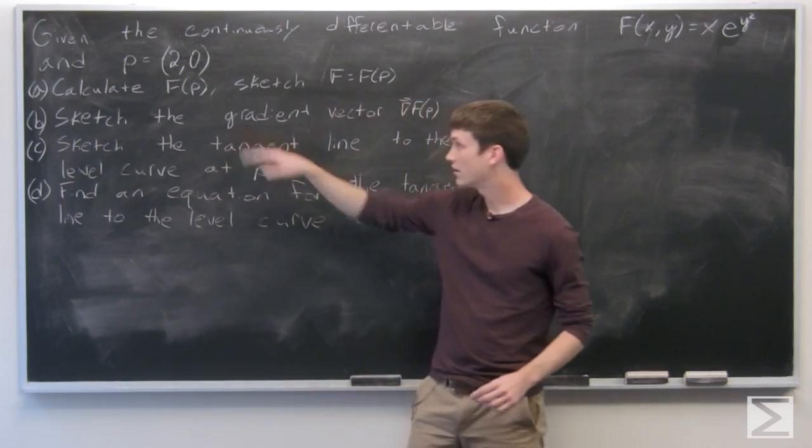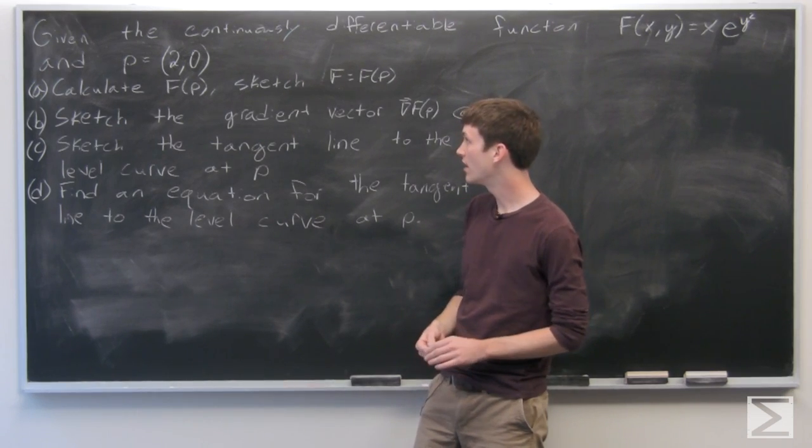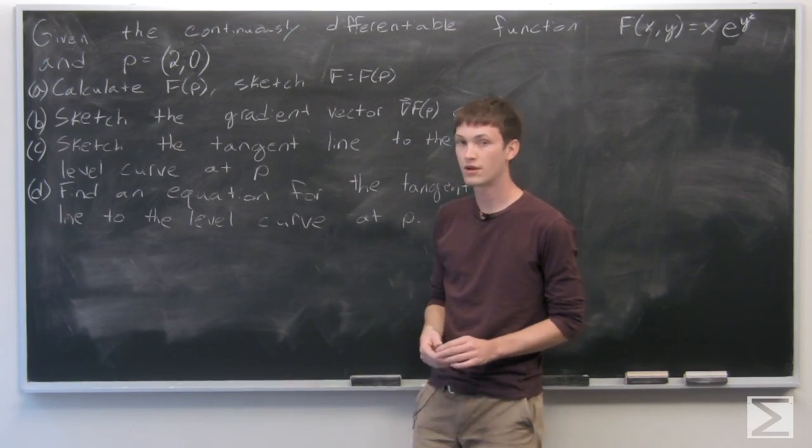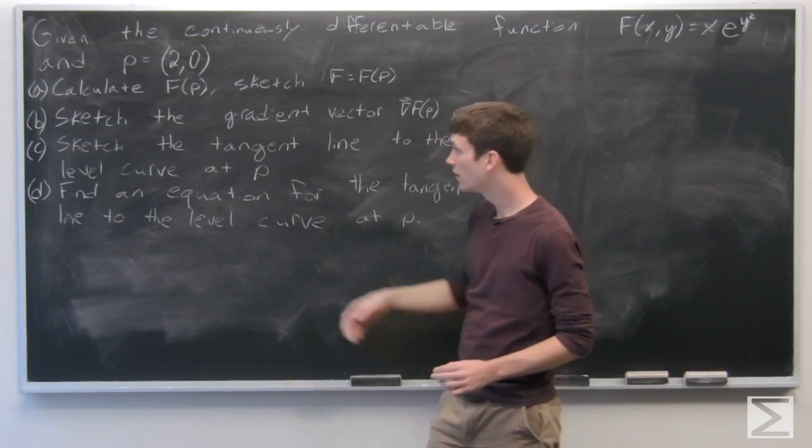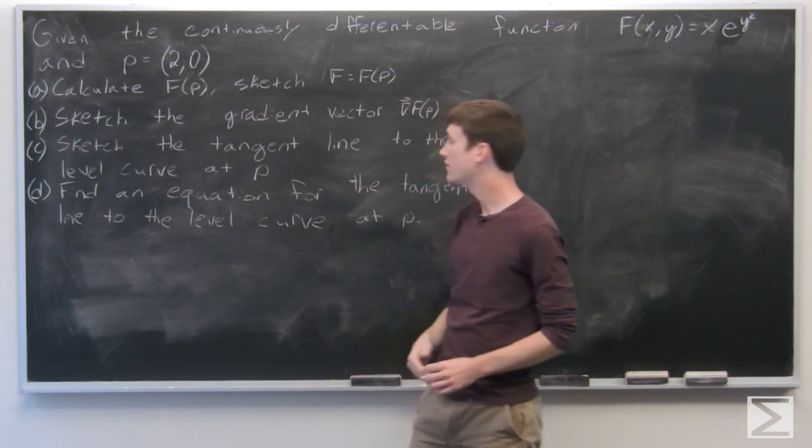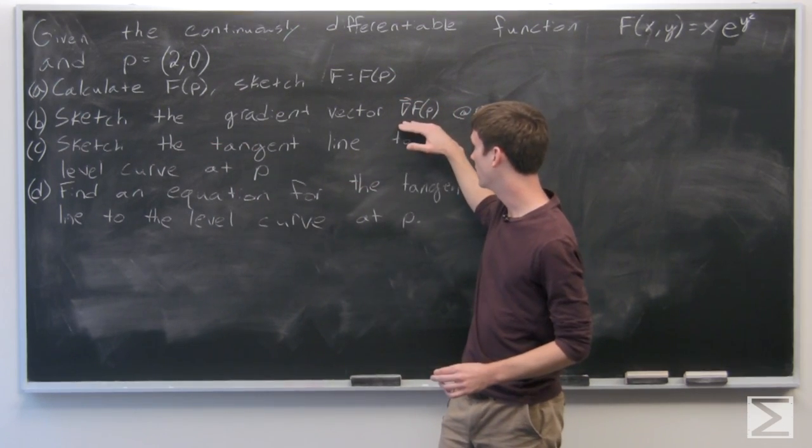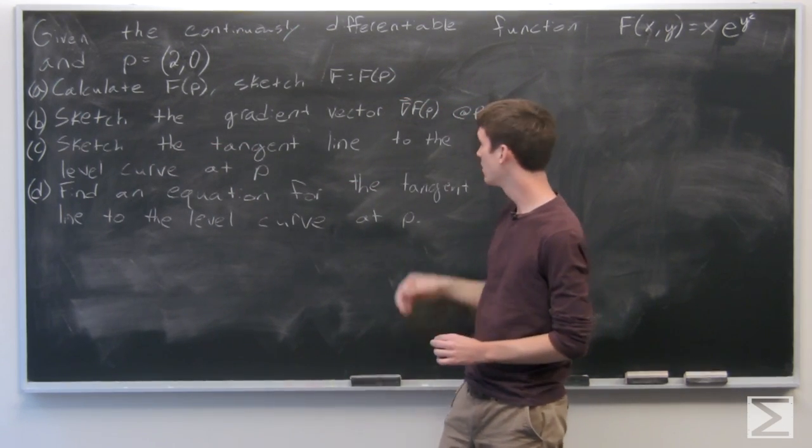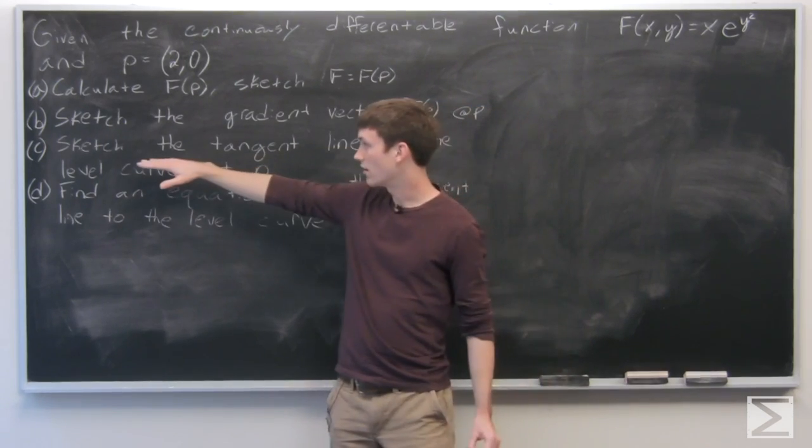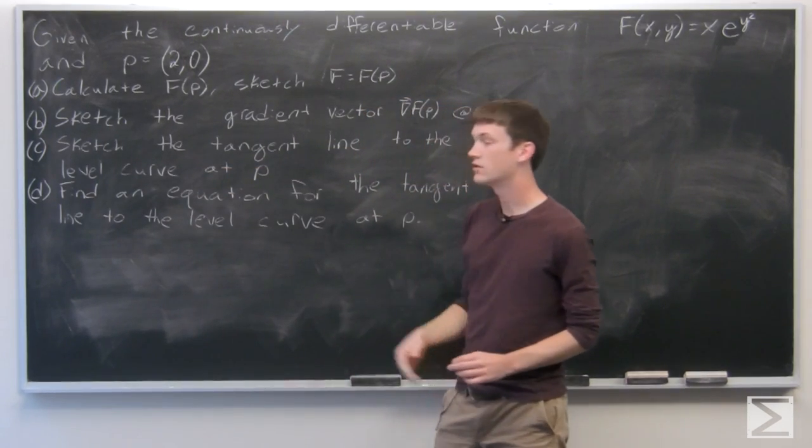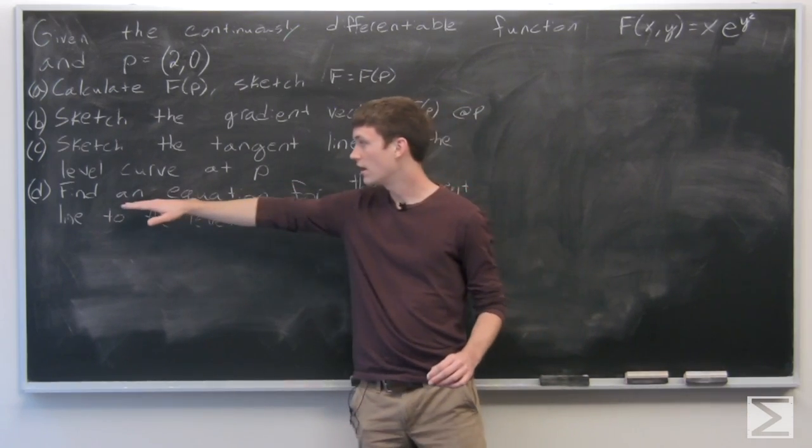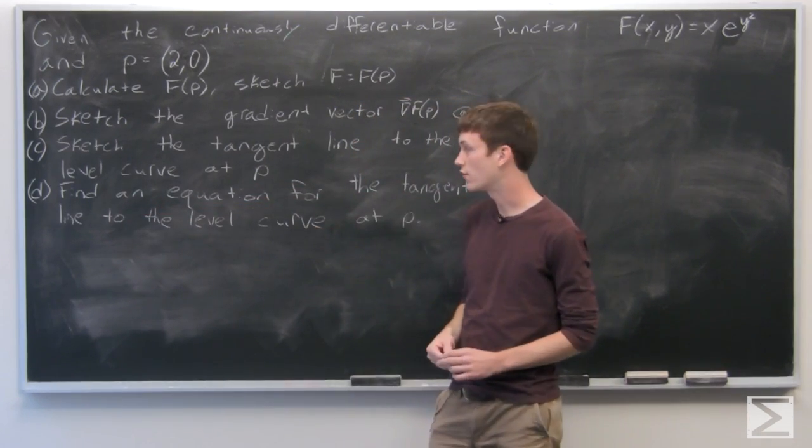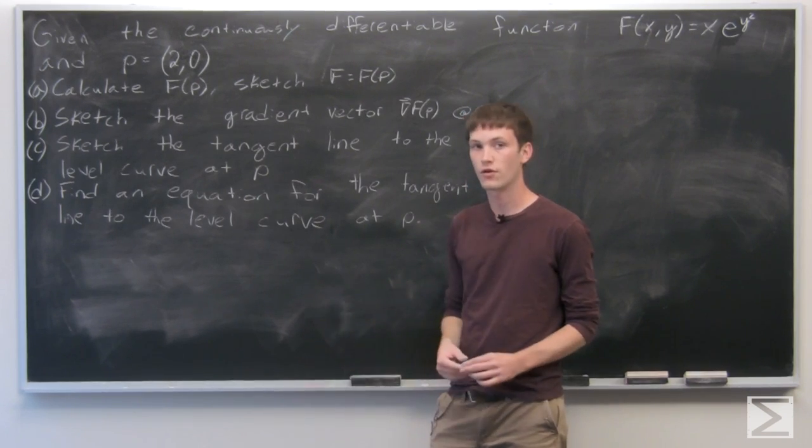We're asked to calculate first f(p), and then sketch the level curve f = f(p), and then sketch the gradient vector ∇f at p, and then sketch the tangent line to the level curve at p, and find an equation for the tangent line to the level curve.